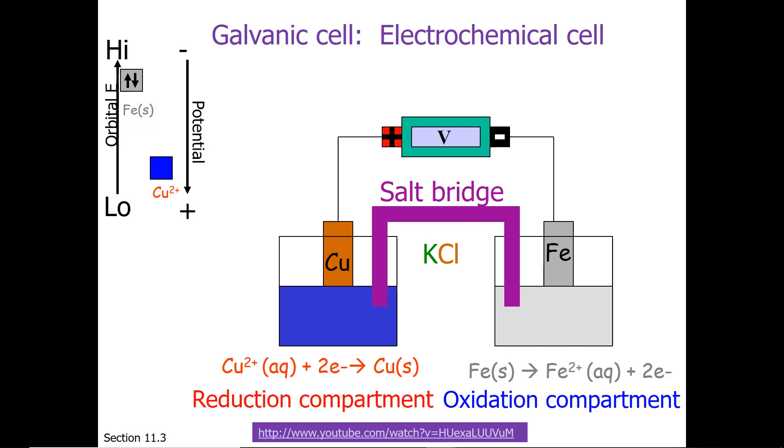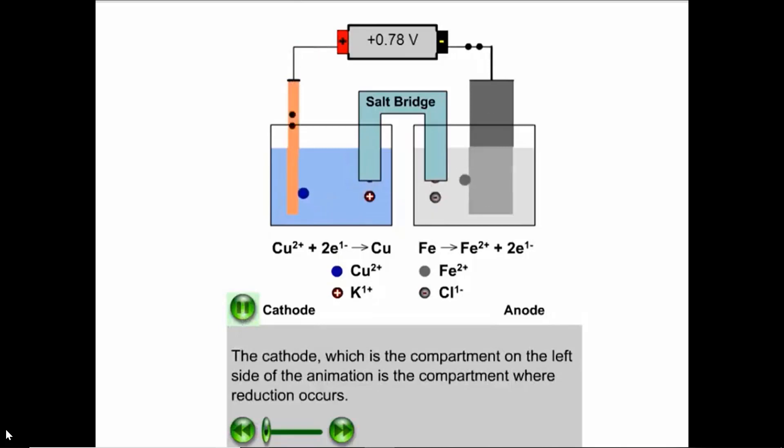I have a video to show you of all the moving parts that occur when you make an electrochemical cell. The cathode, which is the compartment on the left side of the animation, is the compartment where reduction occurs.